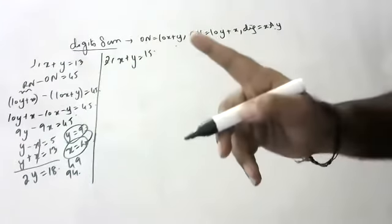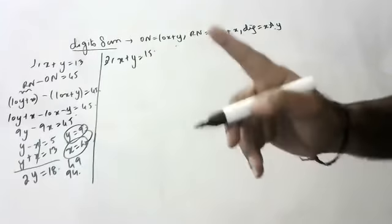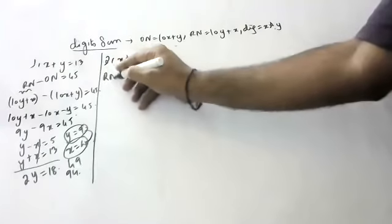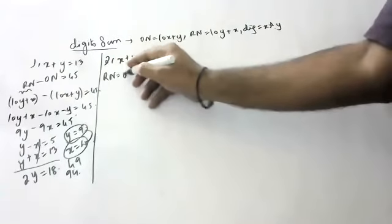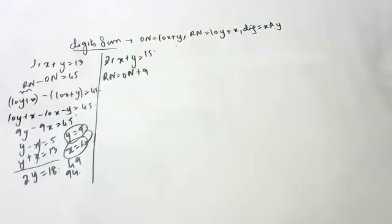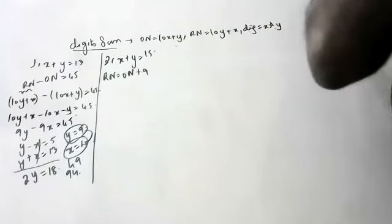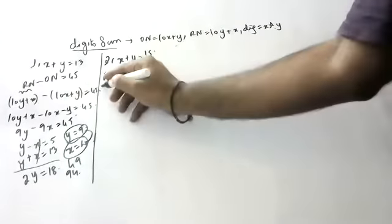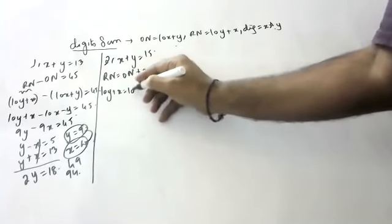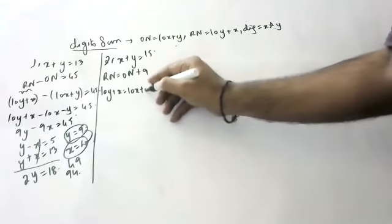Number obtained by reversing the digits exceeds the original number by 9. So the reversal number 10Y plus X is equal to the original number 10X plus Y plus 9.